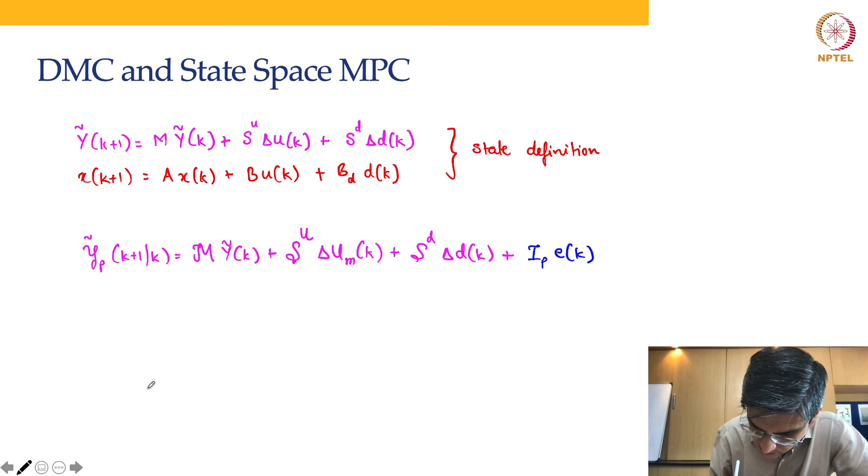Likewise, we also have multi-step prediction equation in state space MPC. The state space MPC multi-step prediction equation is of the form ŷ_p(k+1|k) = S_x x(k) + S_u Δu_M(k), same as here, plus S_d Δd(k). Then we have to have some kind of correction, and this correction is based on the overall disturbance model. I can write this as S_e multiplied by w(k), where w(k) would in general be a stochastic system. How do we take care of this? We will take care of this through disturbance modeling.